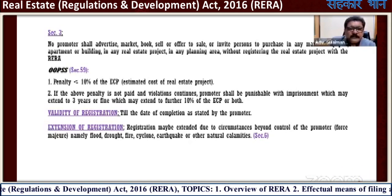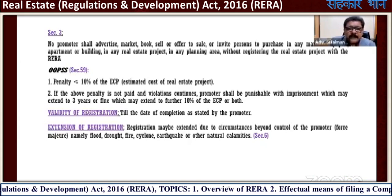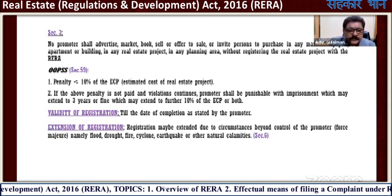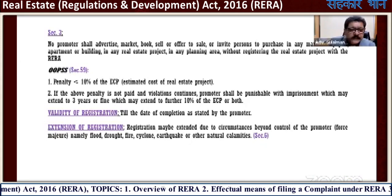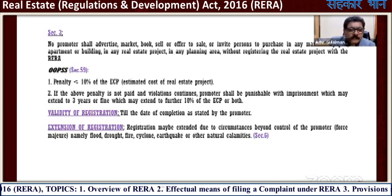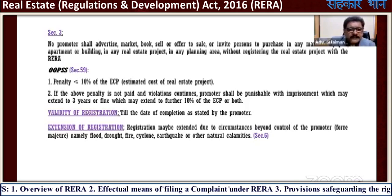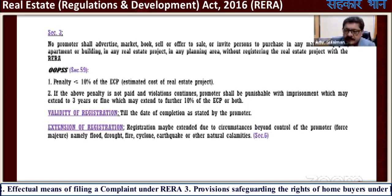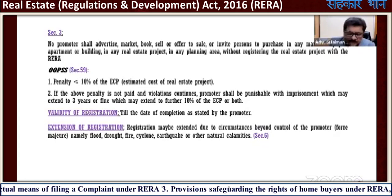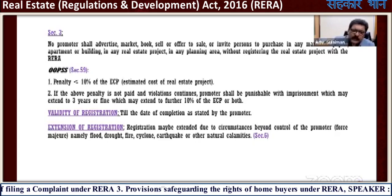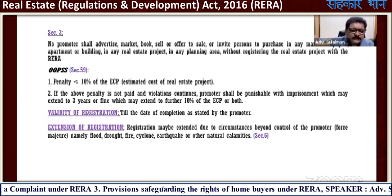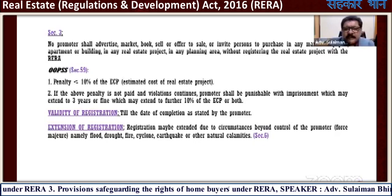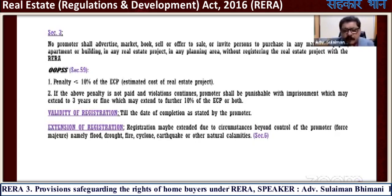If the project is not completed by 2022, he will get a further extension and the registration is valid till he completes the project. Extension of registration may be granted due to force majeure circumstances — namely flood, drought, fire, cyclone, earthquake, and other natural calamities — under Section 6 of the RERA Act. We have faced this pandemic, so a six-month extension was given to all builders.